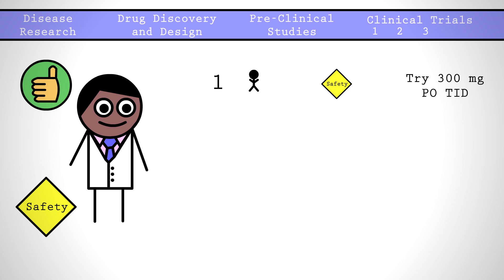Phase 1 is to screen for safety. Fewer than 100 people are used to confirm a safe dose and look at glaring side effects.